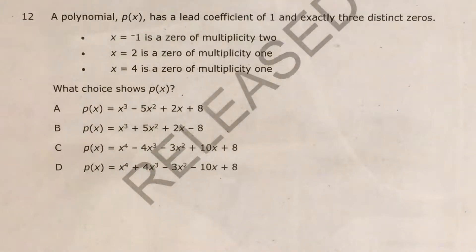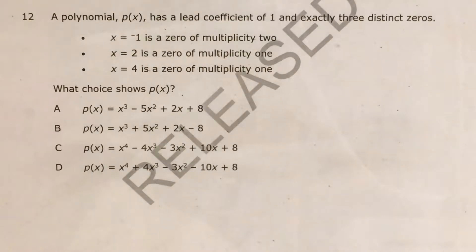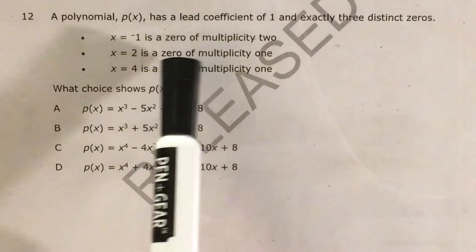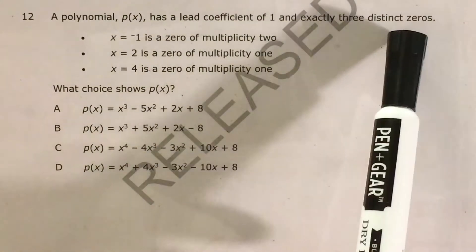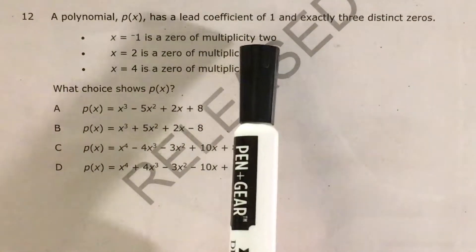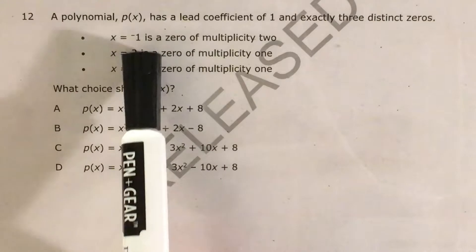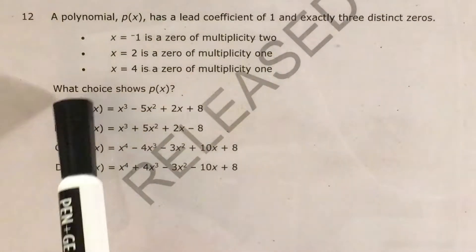What's up, math scholars and math haters? This is Mr. W. Today we're going to tackle question 12 in the Math 3 questions that North Carolina released this past school year. The question tells us that some polynomial has a lead coefficient of 1 and exactly 3 distinct zeros. Negative 1 is multiplicity 2, and then 2 and 4 are each multiplicity 1, and we're supposed to find P of x.